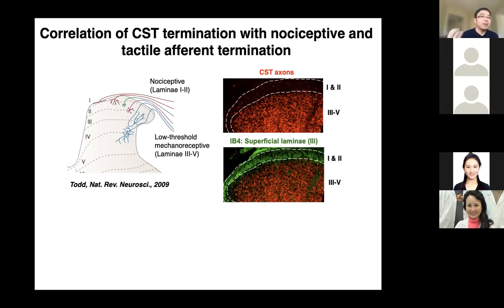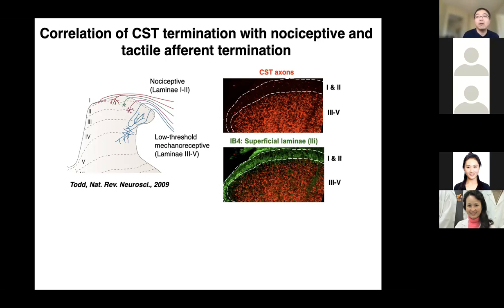This result indicated that CST ablation selectively impairs light touch response. Such deficits in light touch responses are likely due to sensory detection, because the motor response — hindpaw withdrawal — was relatively normal to other stimuli. Anatomically, primary sensory afferents terminate with a specific distribution pattern in the dorsal horn: nociceptive afferents primarily innervate the superficial dorsal horn, where CST axons avoid.